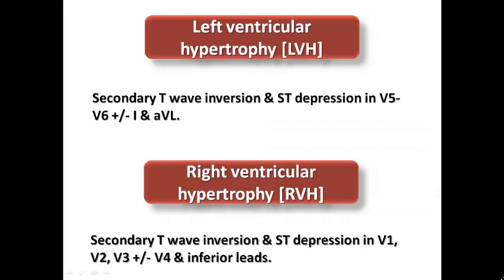For LVH strain pattern, we expect secondary T-wave inversion and ST depression in left-sided leads: V5, V6, plus lead I and aVL — the lateral leads that look specifically at the left ventricle. With right ventricular hypertrophy, we expect secondary T-wave inversion and ST depression in V1, V2, V3, and sometimes inferior leads. So LVH strain is in lateral leads, while RVH strain is in the right precordial leads plus or minus the inferior leads.